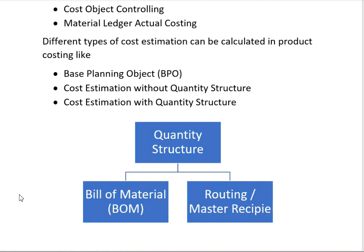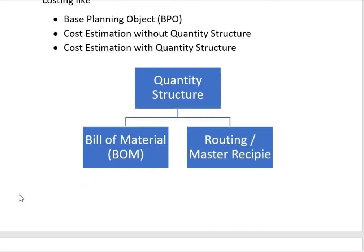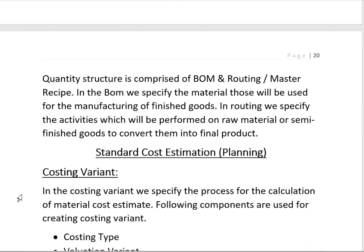The quantity structure is comprised of BOM and Routing or Master Recipe. Routing is used when we are doing discrete manufacturing, and Master Recipe is used when we are in the process industry, like the oil industry or beverage industry. In the BOM we specify the materials which will be used for manufacturing of finished goods. In Routing we specify the activities which will be performed on raw materials or semi-finished goods to convert them into the final product.